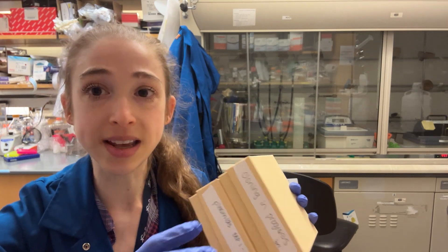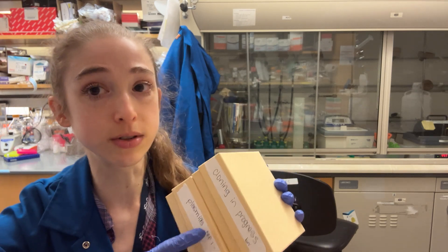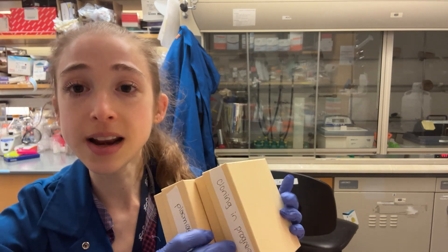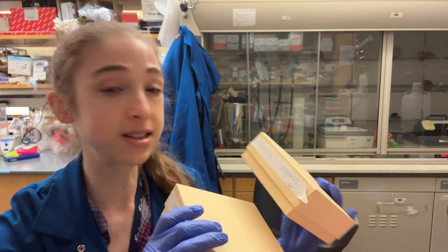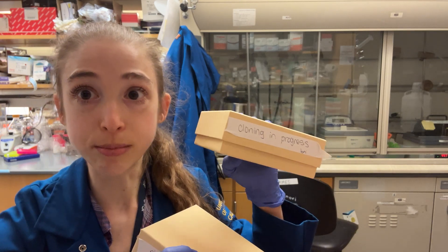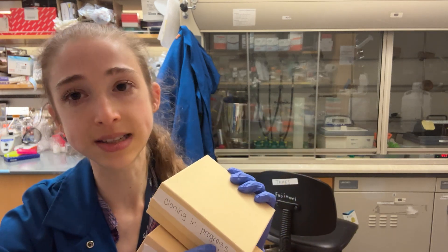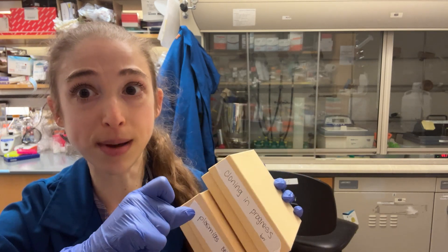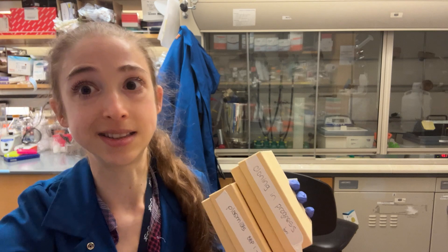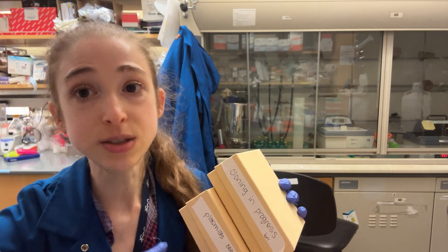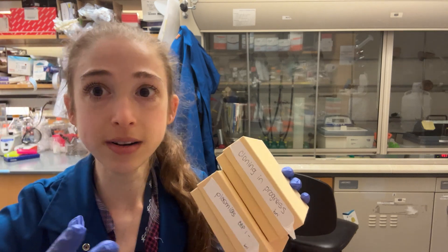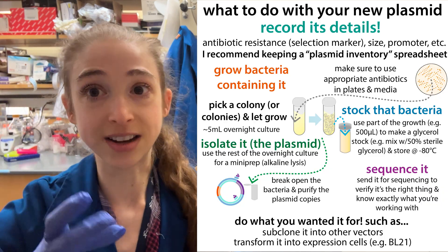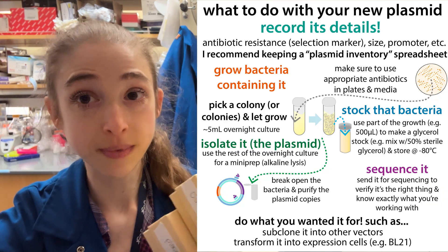So instead, when I get the sequencing results back, I go to my 'cloning in progress' box, find the tubes that were the bad ones, and toss them. This way, I don't have to worry about accidentally using them in the future.